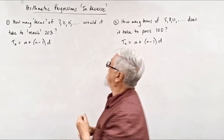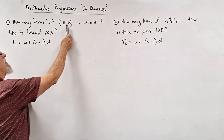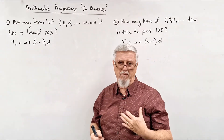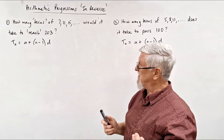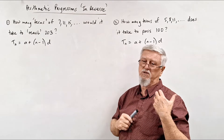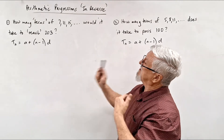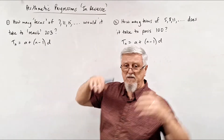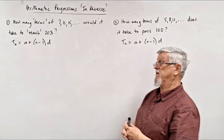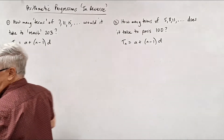Let's have a look at what's happening. If we start with 7 and keep adding 4 each time — thinking about money — if you had $7 in your bank account and your parents add $4 each day, how long would it take to reach $203? How many days would it take?